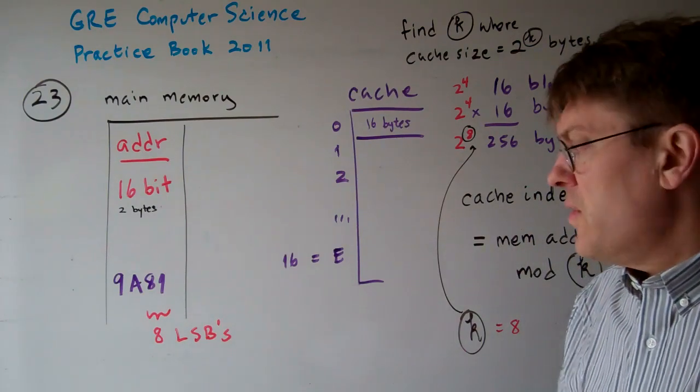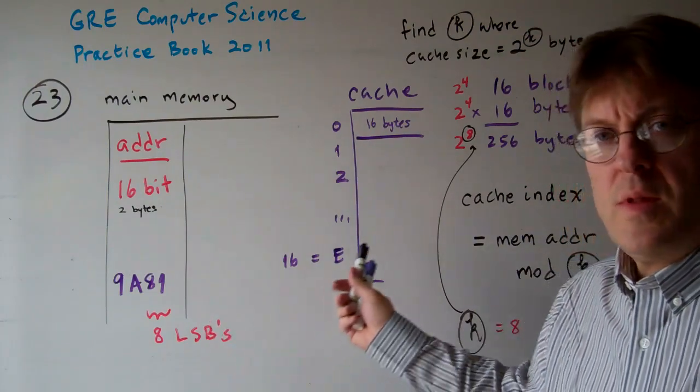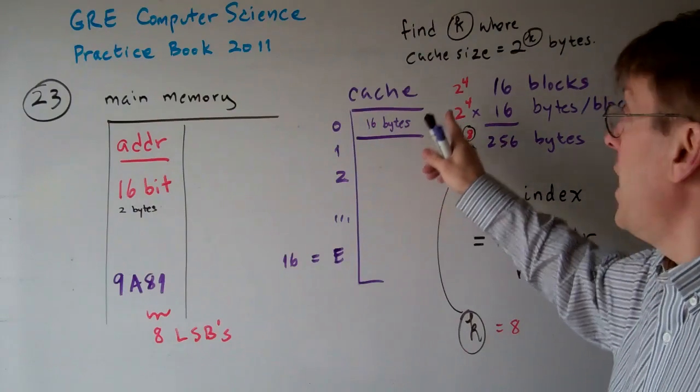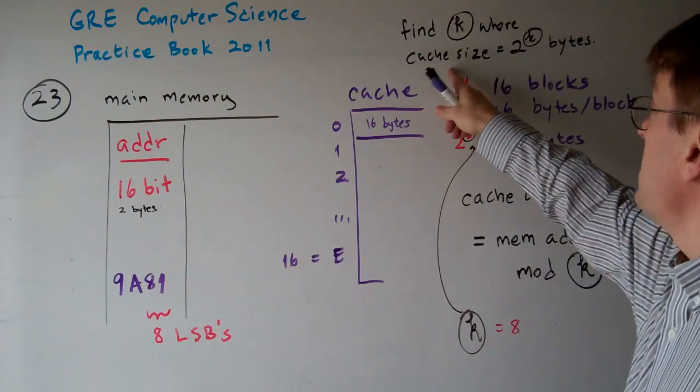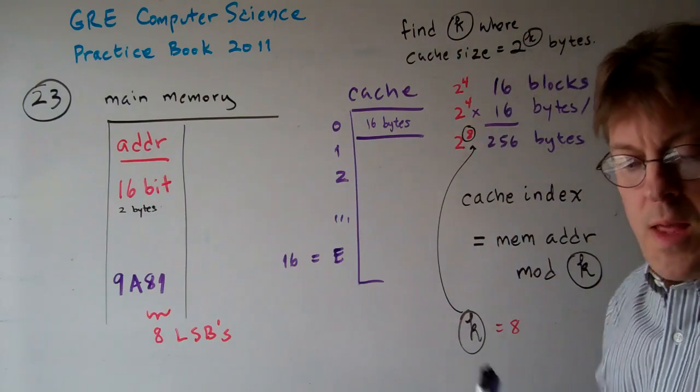In order to figure out which of the least significant bits are going to be used to determine the cache map, you have to calculate out k, where the cache size equals 2 to the k bytes.